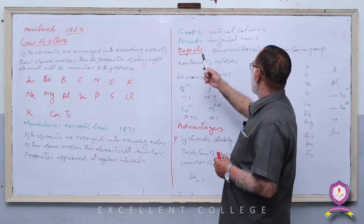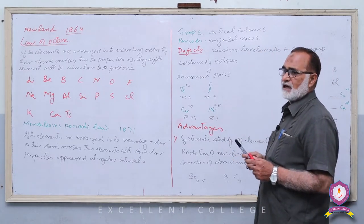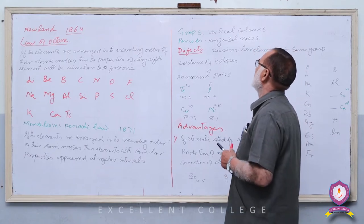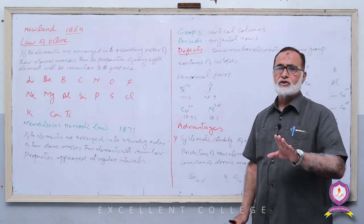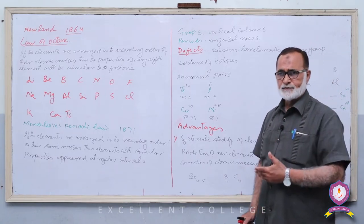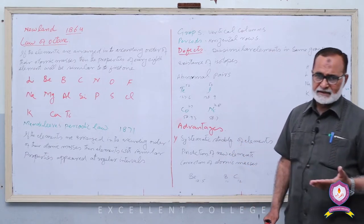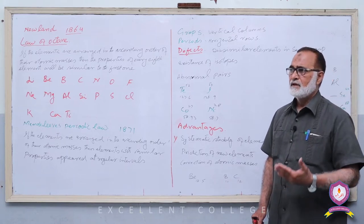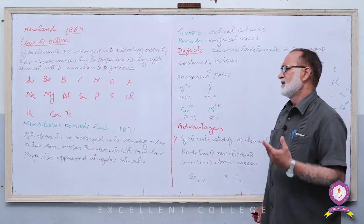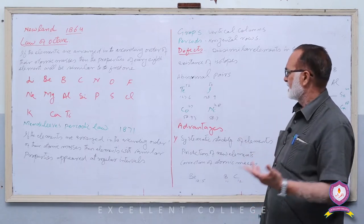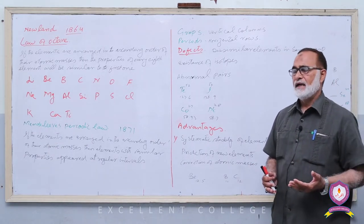اور horizontal lines from left to right کو Periods کہا۔ اس طرح elements کو دو طرح سے divide کیا: into Groups اور into Periods۔ All the elements present in the same group show similar properties — ایک group میں جتنے بھی elements ہیں ان کی properties almost similar ہوں گی۔ So that was the first precise Periodic Table proposed by any scientist۔